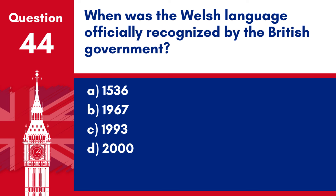Question 44. When was the Welsh language officially recognised by the British government? a. 1536. b. 1967. c. 1993. d. 2000. Answer: b. The Welsh Language Act of 1967 was the first to officially recognise the Welsh language, allowing its use in legal proceedings and government administration in Wales.